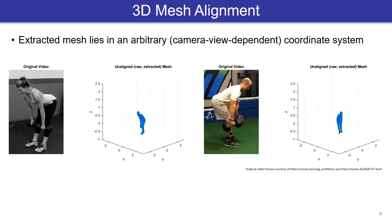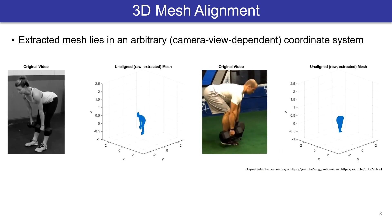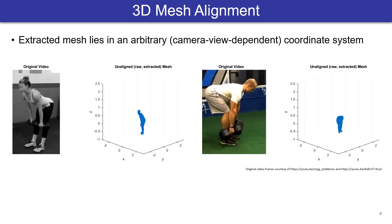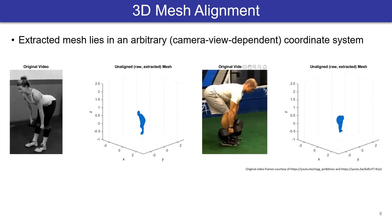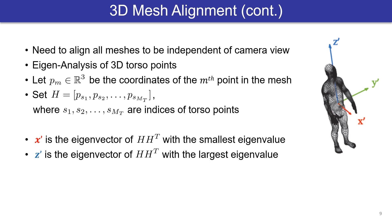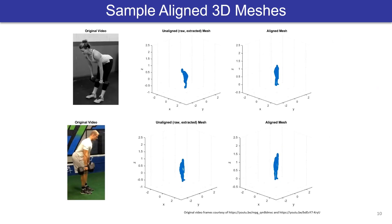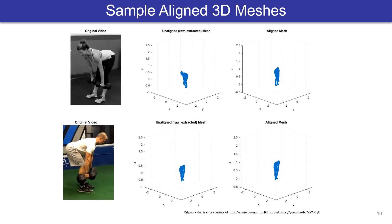Applying this to all video frames, we get a moving 3D model describing the person's motion. However, these 3D points lie in arbitrary coordinate systems depending on the camera view. For example, these two 3D models face different directions. In order to generate massive RF training data from these videos, we need these 3D models to be in the same coordinate system independent of camera views. We do so by performing eigenanalysis on the 3D torso points. The vector pointing towards the front of the person corresponds to the smallest eigenvalue, and the vector pointing towards the top is the one with the largest eigenvalue. This provides a view-independent coordinate system, allowing us to align the 3D models regardless of their original camera views.